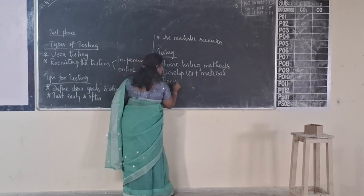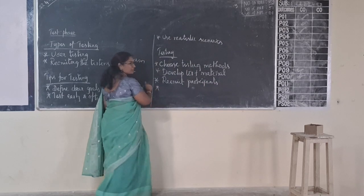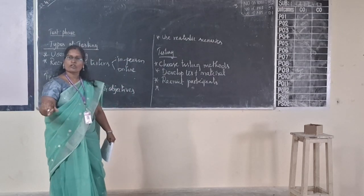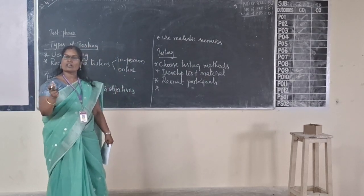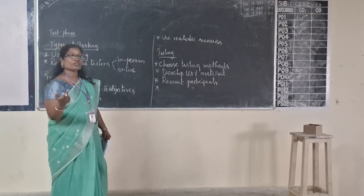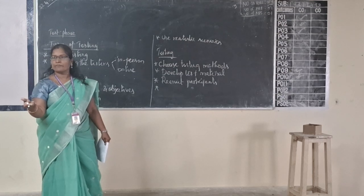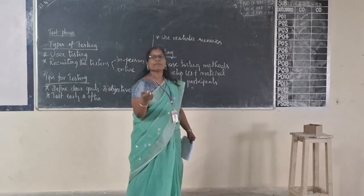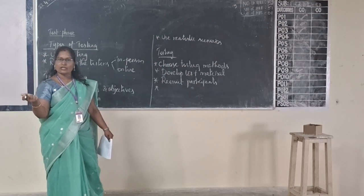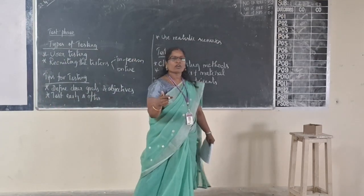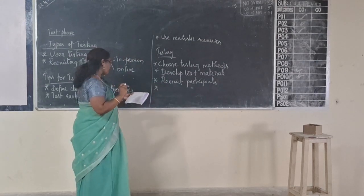Fourth step: recruit participants — decide who will test. Participants can include experts, a team of people doing similar products in another company, your seniors who did a similar project, teachers who are experts in the field, people doing research in that domain, people who will sell the product, and the end users who will use the product.